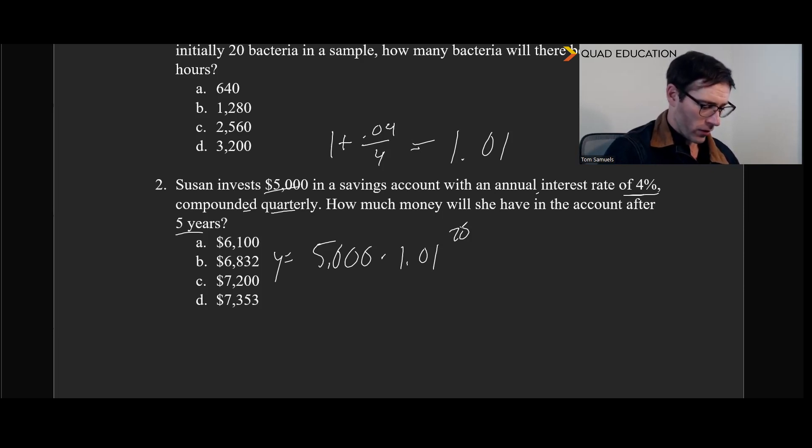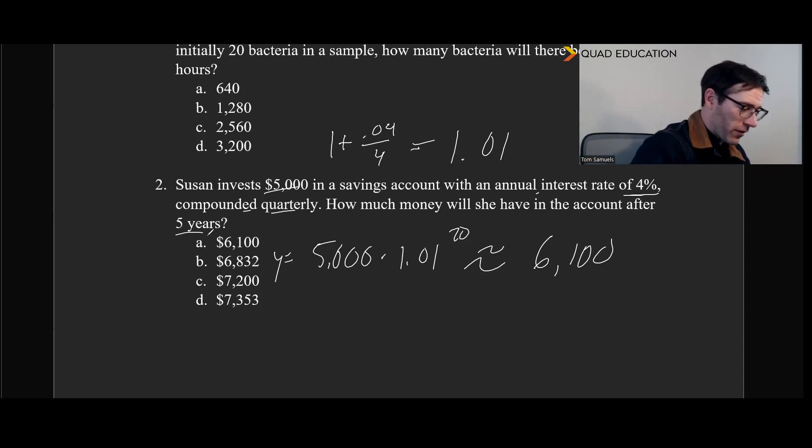And just pulling out my calculator here. 1.01 to the 20 times 5,000 is around $6,100. And yes, this is absolutely going to be a calculated question. So either an ACT question or an SAT calculated question. So pretty straightforward.